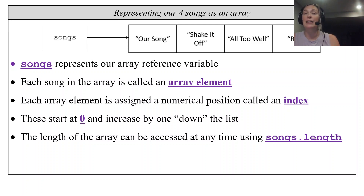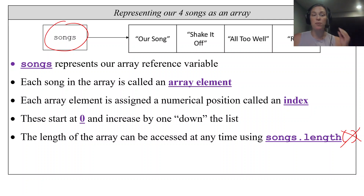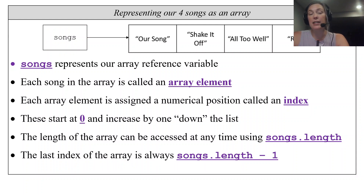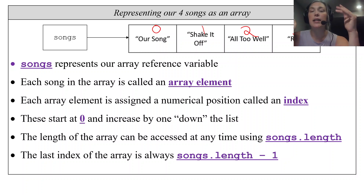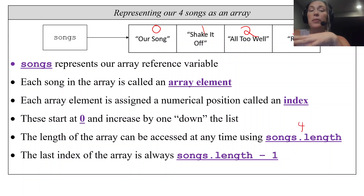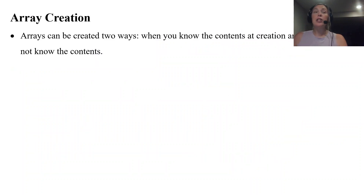The length of the array can be accessed at any time using songs.length — that's an attribute, not a method, so there are no parentheses. The last index of the array is always songs.length minus one. In this example songs.length is four, so the last index is four minus one, which is three.